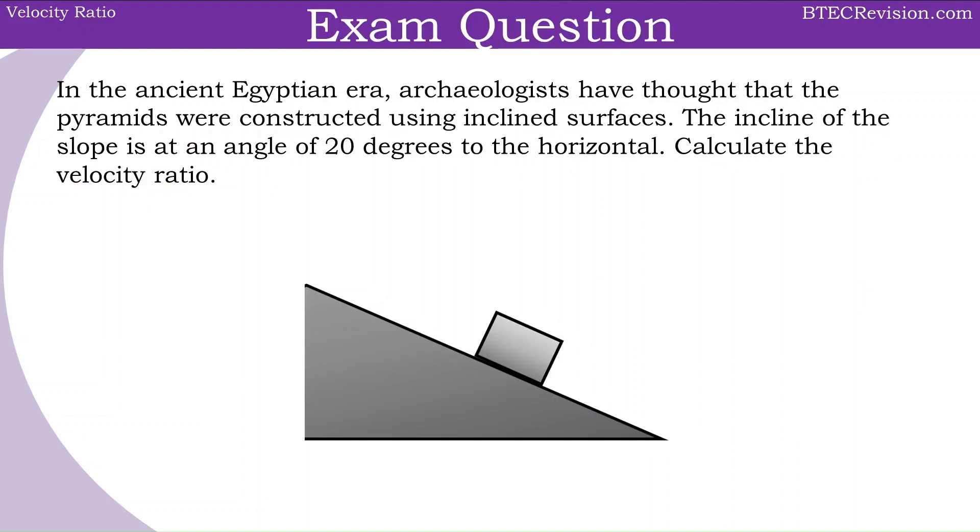Now pause the video here and attempt this exam question. In the ancient Egyptian era, archaeologists have thought that the pyramids were constructed using inclined surfaces. The incline of the slope is at an angle of 20 degrees to the horizontal. Calculate the velocity ratio.